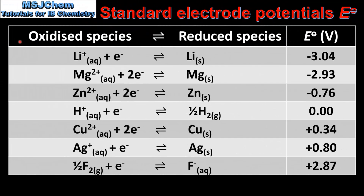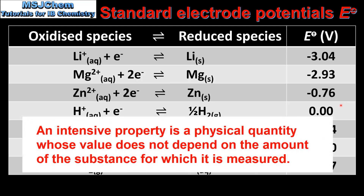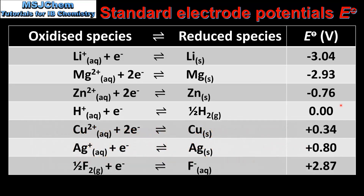Next we'll have a quick review of standard electropotentials. In this table we have standard electropotentials for a variety of half cells. The first thing we note is that these are written for the reduction reaction. Another point to note is that because voltage is an intensive property, these values are not multiplied according to the stoichiometry of the equation — we use them exactly as they are shown in the table. When connecting two half cells in a voltaic cell, the half cell with a more negative standard electropotential will be the anode, and the half cell with a more positive standard electropotential will be the cathode.